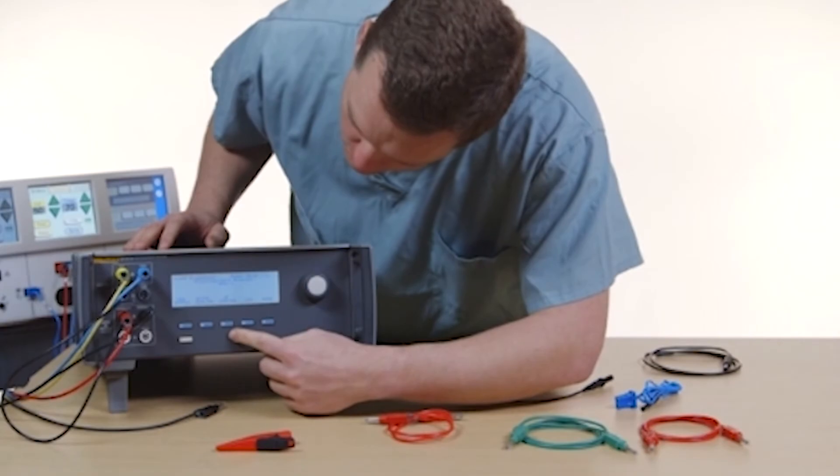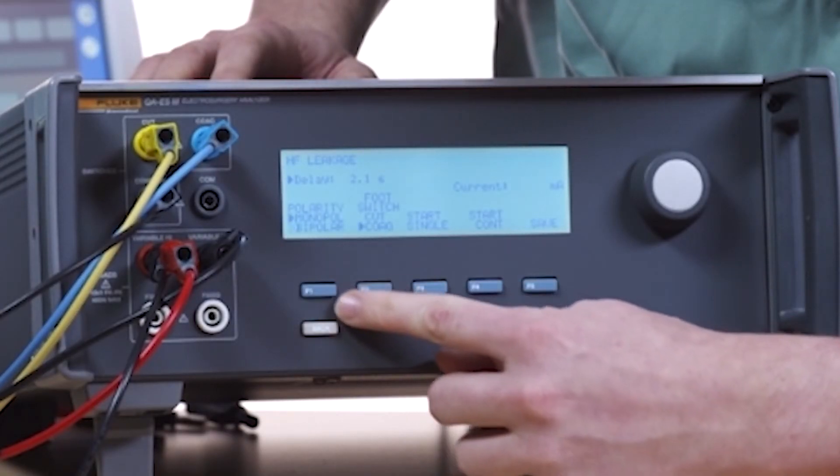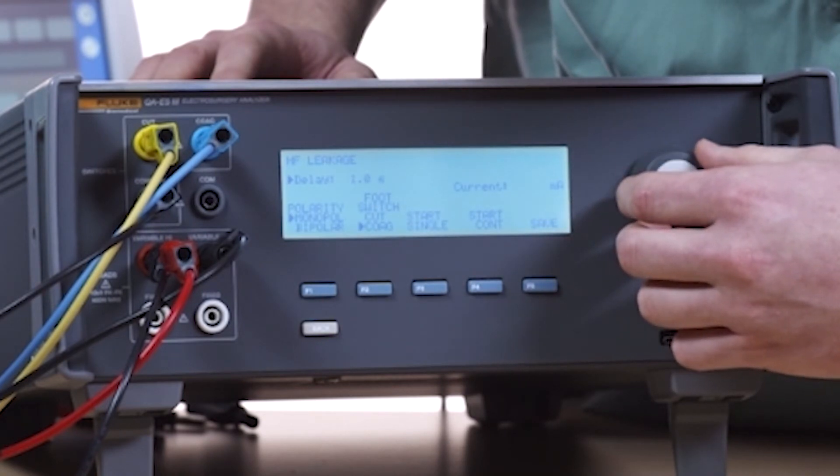On menu 1, select HF leakage. Set polarity to monopolar. Use the rotary knob to set the delay for the foot switch. In this example, the delay is 1 second.